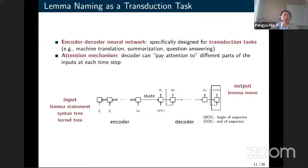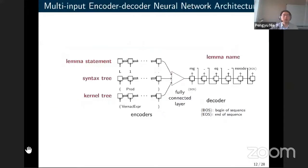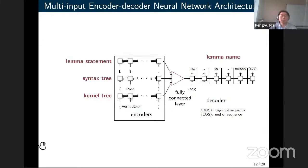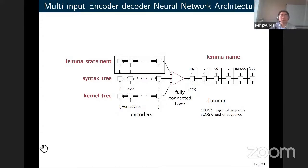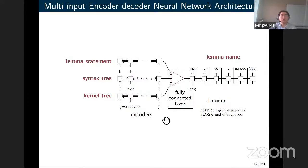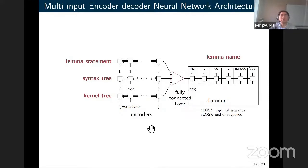In Roosterize, we have three inputs, so we extended this model to a multi-input encoder-decoder neural network with multiple encoders — one for each input: lemma statement, syntax tree, and kernel tree. To connect all encoders with the decoder, we have a fully connected layer in the middle that merges the three final states from these encoders. This layer has trainable parameters that learn how to perform this merge. The decoder then takes that merged state and generates the lemma name as a prediction.